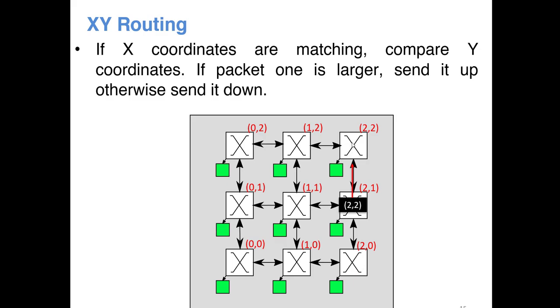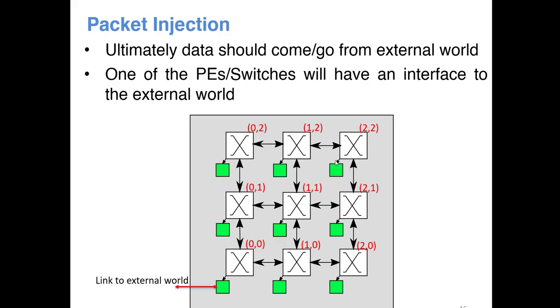Now another important thing is whenever you are using a NoC, ultimately the data for processing has to come from external world, from some sensor or wherever. It should get processed and processed data should go out to the external world. For enabling it, one of the PEs or one of the switches will be interfaced with the external world using a particular bus protocol. Usually we use the bottom left corner PE for interfacing with the external.